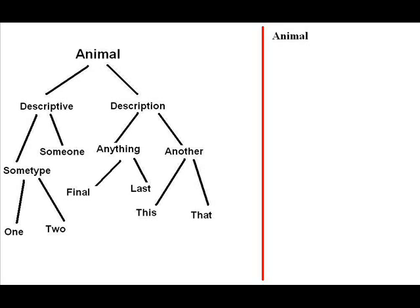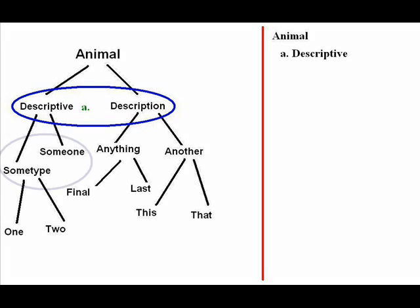Next, we need to look what's under animal. Those two things are these two words, descriptive and description. Since this is our first group, we will label it A. We could start with either side, it doesn't matter. Let's start with the left side, descriptive. So we indent and we put down our first word of our first group.